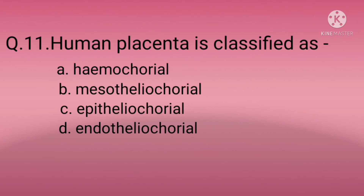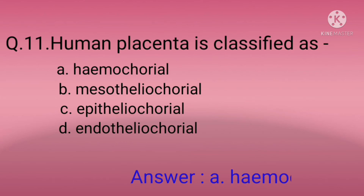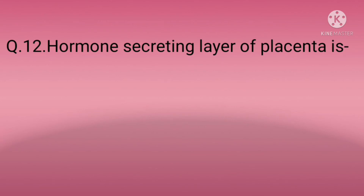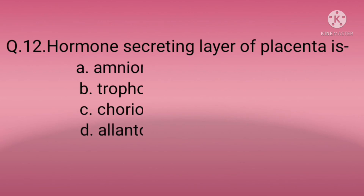Question eleven: Human placenta is classified as? Option A: Hemochorial, Option B: Mesothelial chorial, Option C: Epitheliochorial, Option D: Endotheliochorial. The correct option is A — hemochorial.